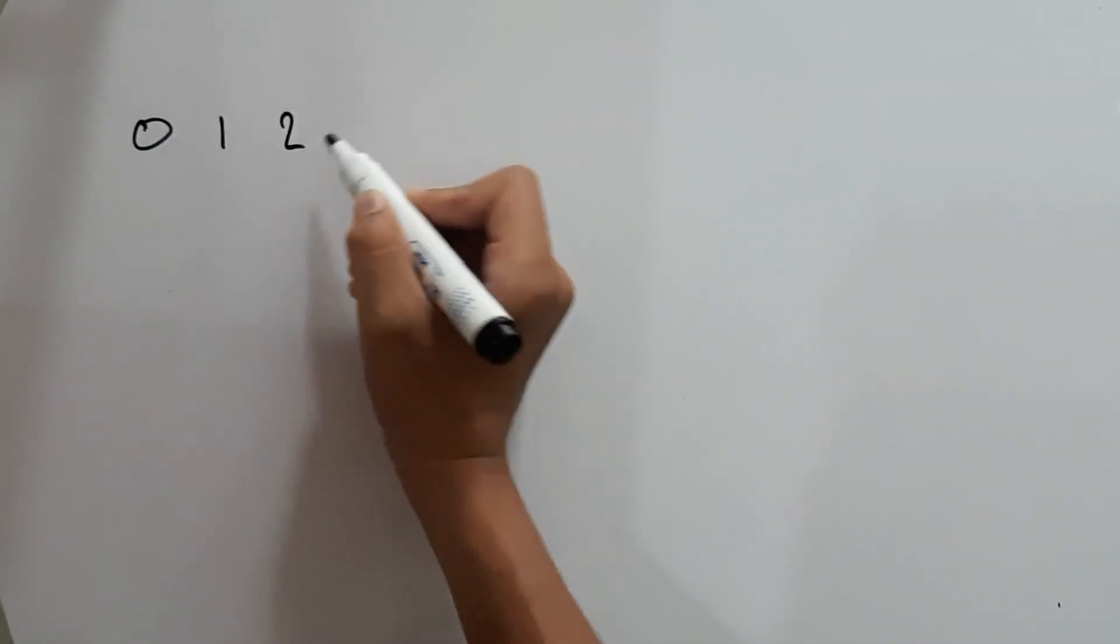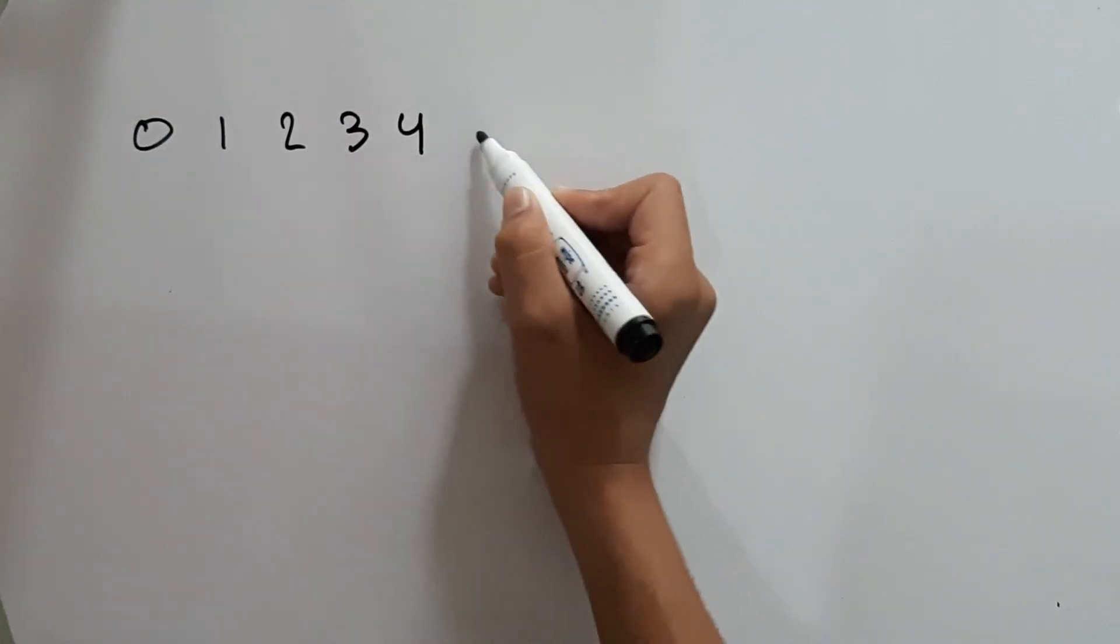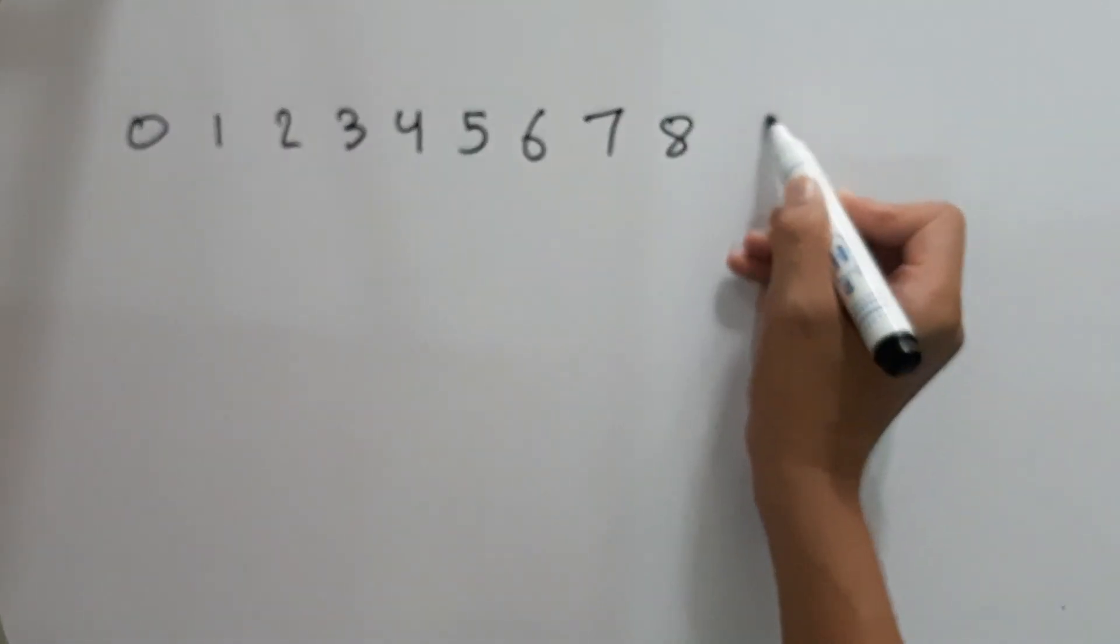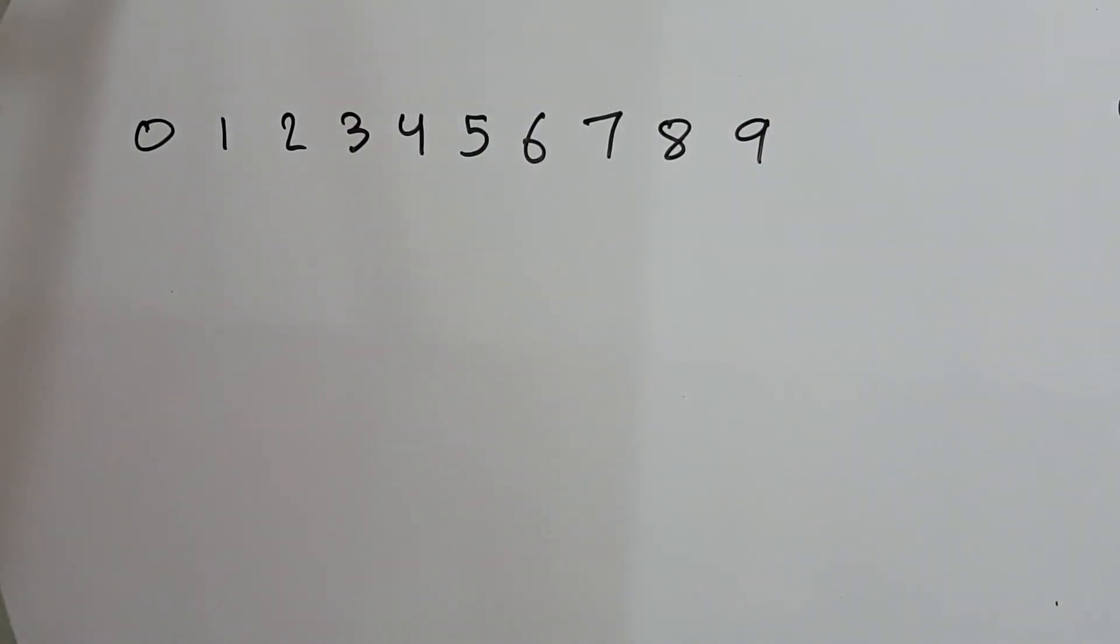The digits are 0, 1, 2, 3, 4, 5, 6, 7, 8, and 9. I will change the color for you.